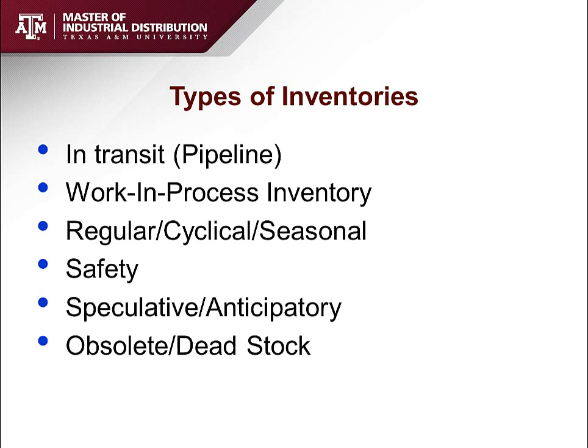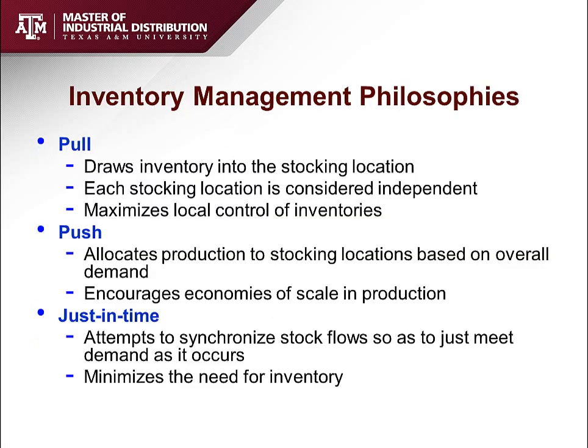Finally, obsolete or dead stock refers to inventories that are no longer useful. There are also various inventory management philosophies. The pull inventory policy draws inventory into a stocking location — the idea is that each stocking location, such as a branch, is an independent entity making its own decisions about what to buy, when to buy, and how many to buy.